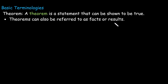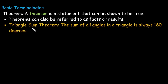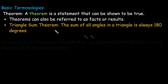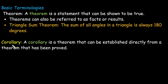For example, from our primary classes, the sum of all angles in a triangle is always 180 degrees. This is called a theorem — it is a true statement that we have already proved in primary classes.